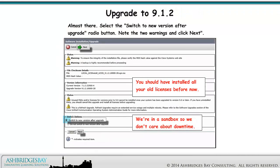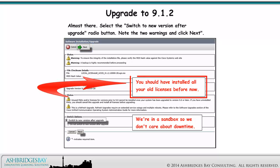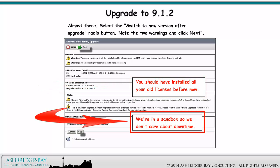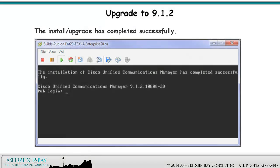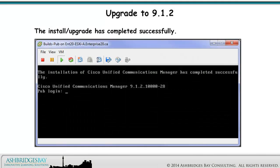Almost there! Select the 'Switch to new version after upgrade' radio button. Note the two warnings and click Next. The first warning concerns licensing — you should have installed all your old licenses before now. The second concerns downtime for a refresh upgrade. We're in a sandbox, so we don't care. The Install Upgrade has completed successfully.